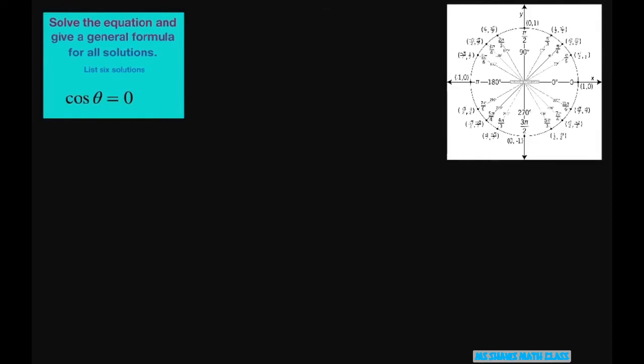So first let's find where cosine is zero. That means where x is zero here and here. That means it's at π/2 and 3π/2.